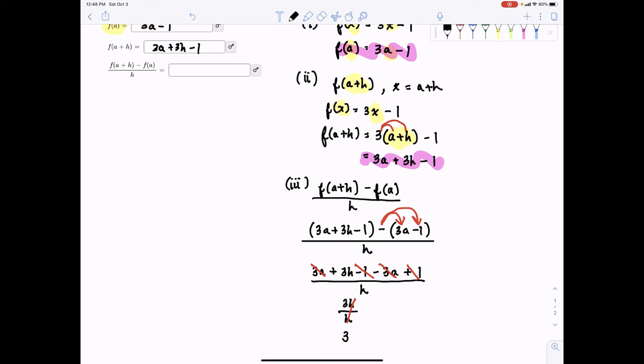So f(a+h) minus f(a) over h is just 3. And so this is a very important quotient. It has its own special name. It's called the difference quotient. You'll see it more in your future math classes. And the reason why it's so special is for this reason specifically...